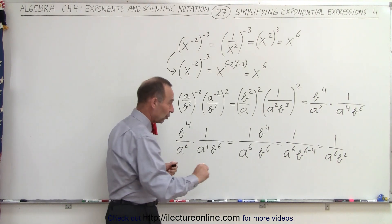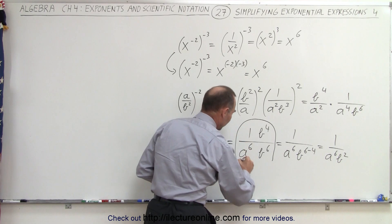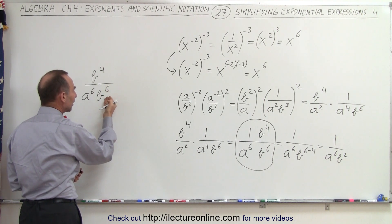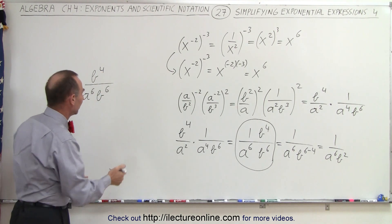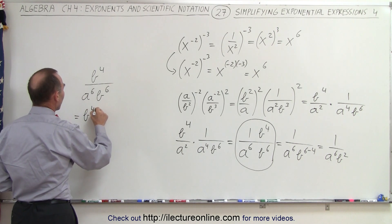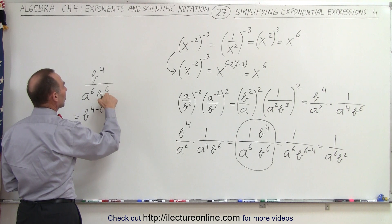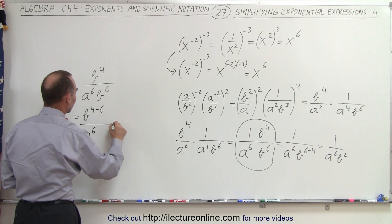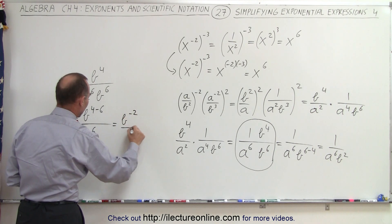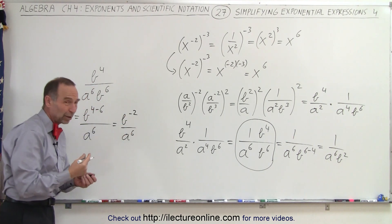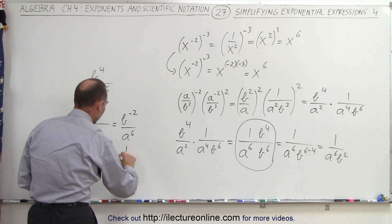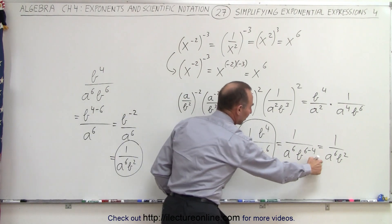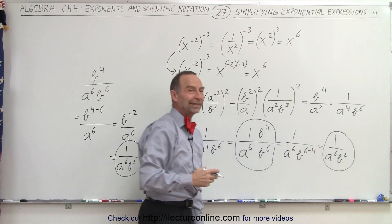Now, what we could have done instead: if we take this portion so far and write it on the side, instead of moving b to the 4th down, let's move b to the 6th up to see what happens. This would become b to the 4th minus 6th, because when you have an exponent in the denominator and bring it to the numerator, you subtract it. In the denominator we end up with a to the 6th. So this becomes b to the negative 2 divided by a to the 6th. Since we don't want to leave a negative exponent, we bring it down, giving 1 over a to the 6th b squared. Again, we end up with the exact same result, just by taking a different path.